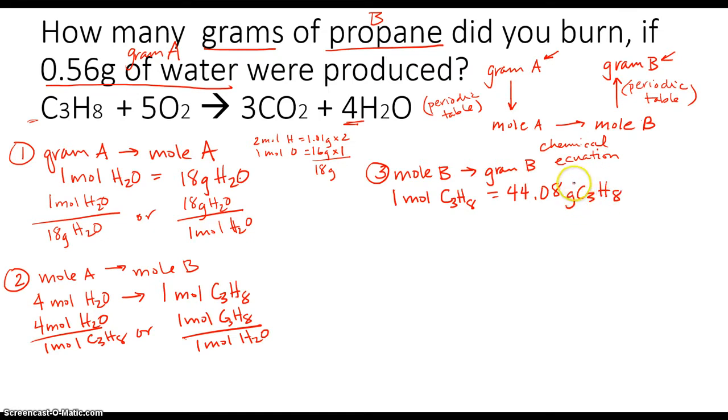I took three carbons times 12, because that's its molar mass, and added eight hydrogens, which each have a mass of 1.01. So I create tiles for this one. One mole C3H8 over 44.08 grams of C3H8. The other option is 44.08 grams of C3H8 over one mole of C3H8. And I can choose either one.